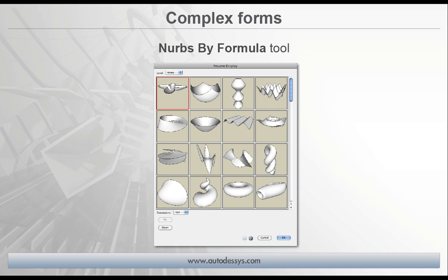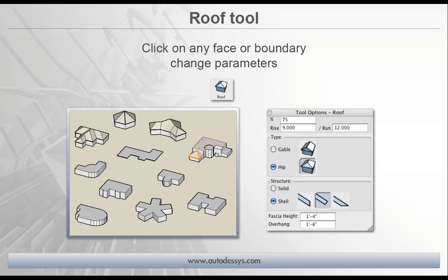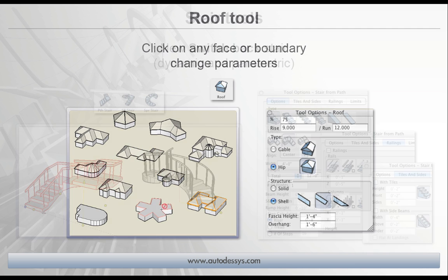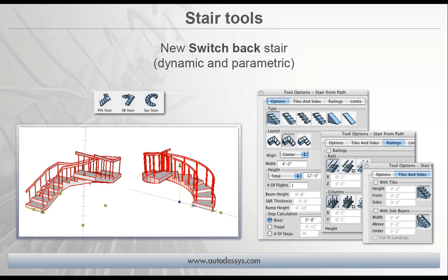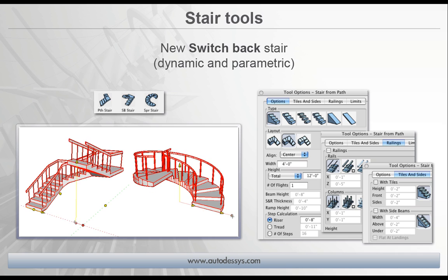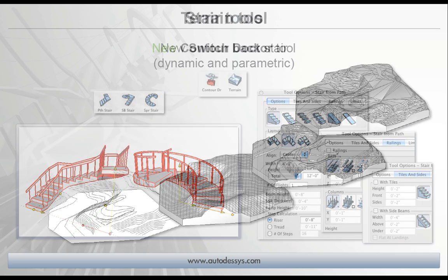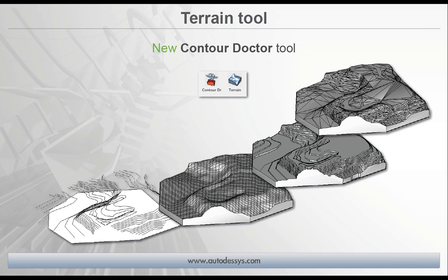You can build interesting shapes with the new NURBS by Formula tool, which lets you explore form through mathematical equations and parameters, or just drag a shape from the pre-existing library into your scene and begin manipulating parameters to create your own new form. The new Roof tool lets you easily create a roof by simply clicking on any boundary, with numerous parameters to control details for a variety of roof structures. We've also added a new Switchback Stair tool, and a new Contour Doctor tool to assist in finding and fixing irregularities in contour lines, which really shortens the time to generate a 3D solid terrain model.